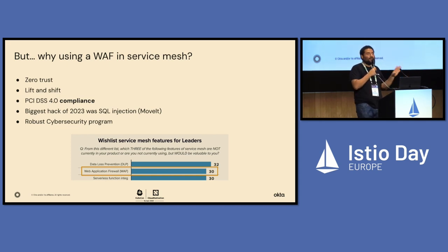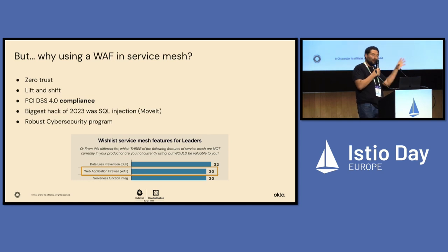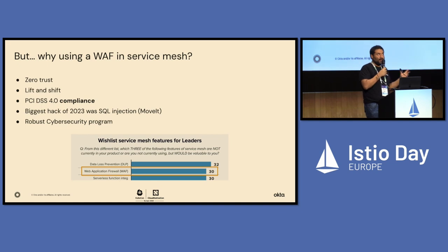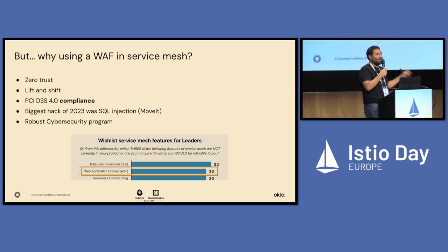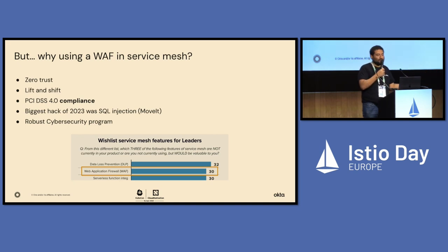PCI DSS compliance — not only for financial websites, but any website that deals with cardholder information should be PCI DSS compliant. From version 4 in March 2025, it is going to enforce a WAF, so you want to deploy that. Also remember that the biggest hack of 2023 was a SQL injection — if you heard about MoveIt from Progress. Although the OWASP top 10 API security is all about authentication and authorization, the biggest hacks are still through SQL injection or cross-site scripting. So you want to deploy the WAF as a measure of protection as part of a broader security strategy.